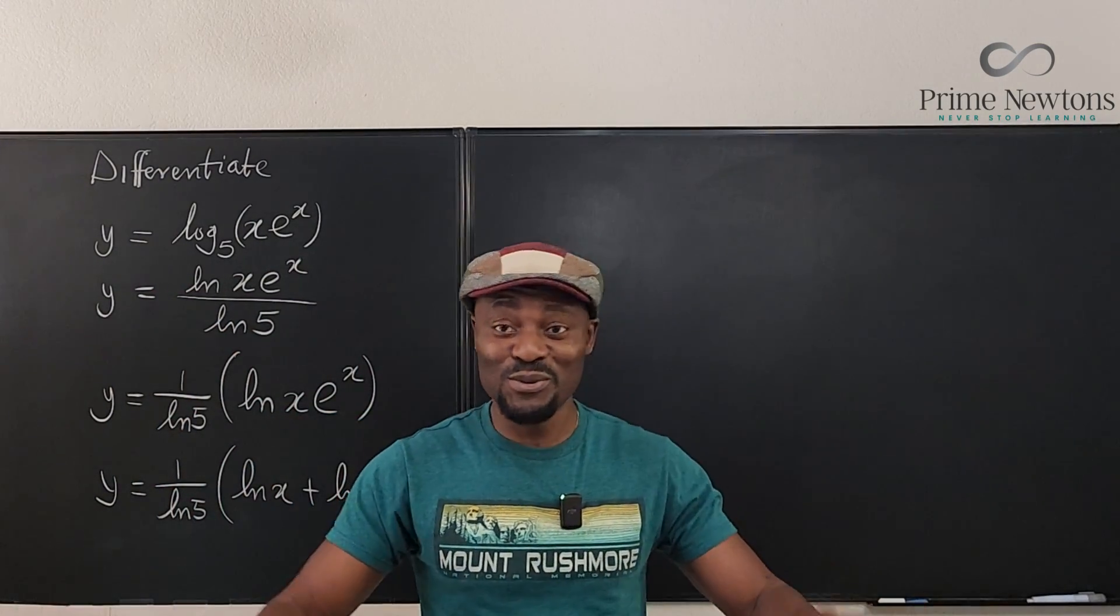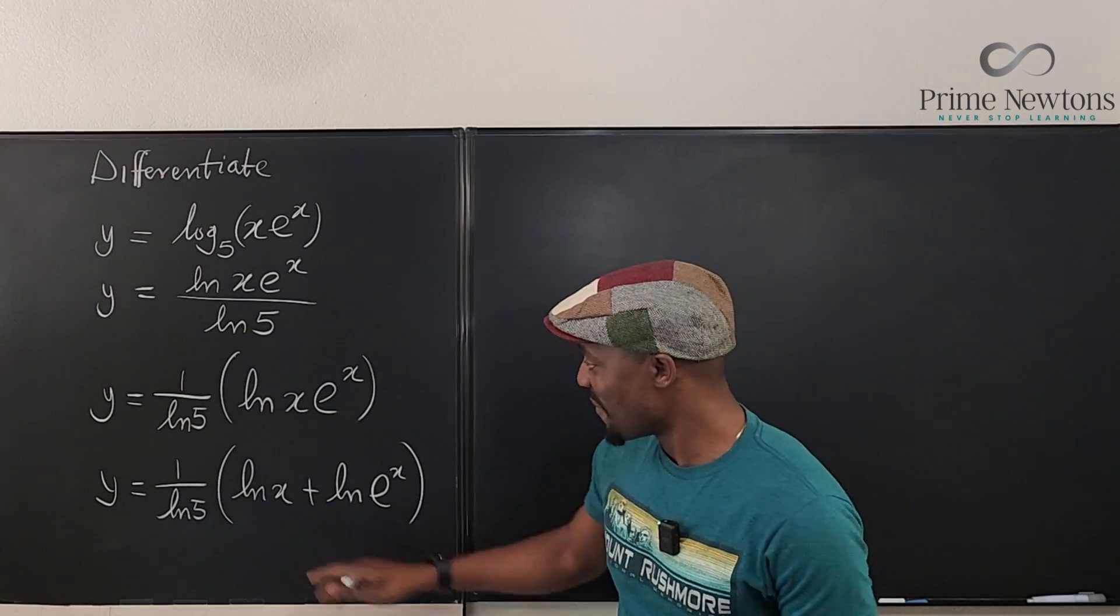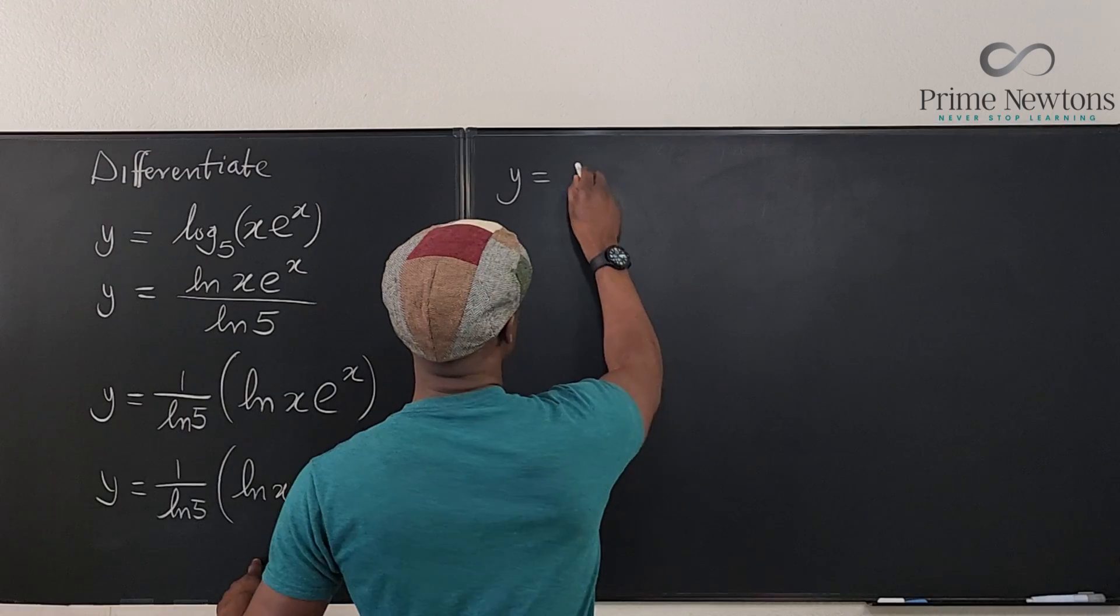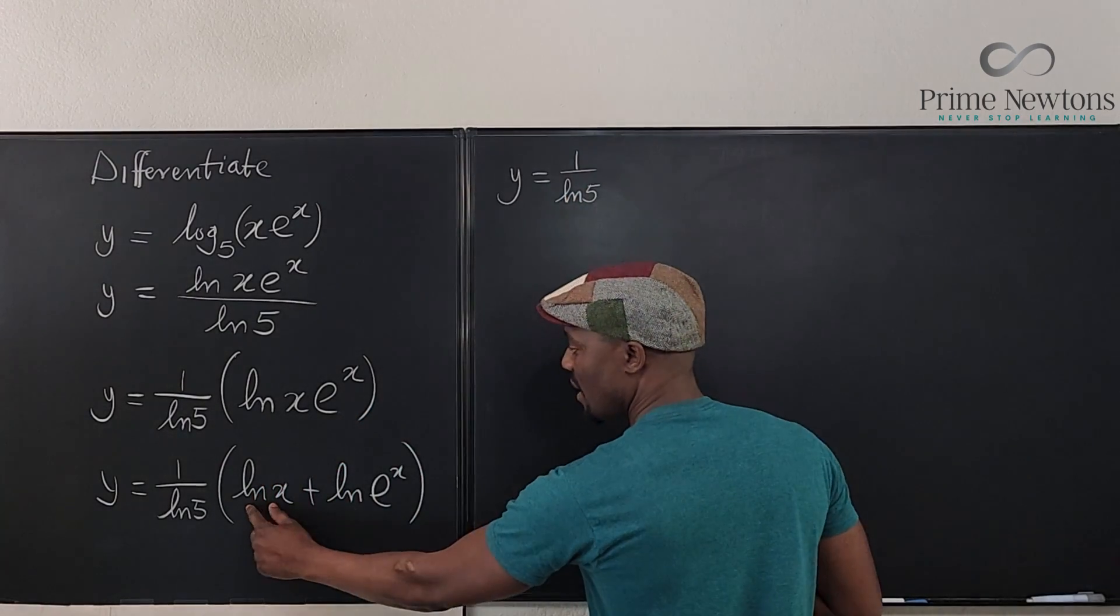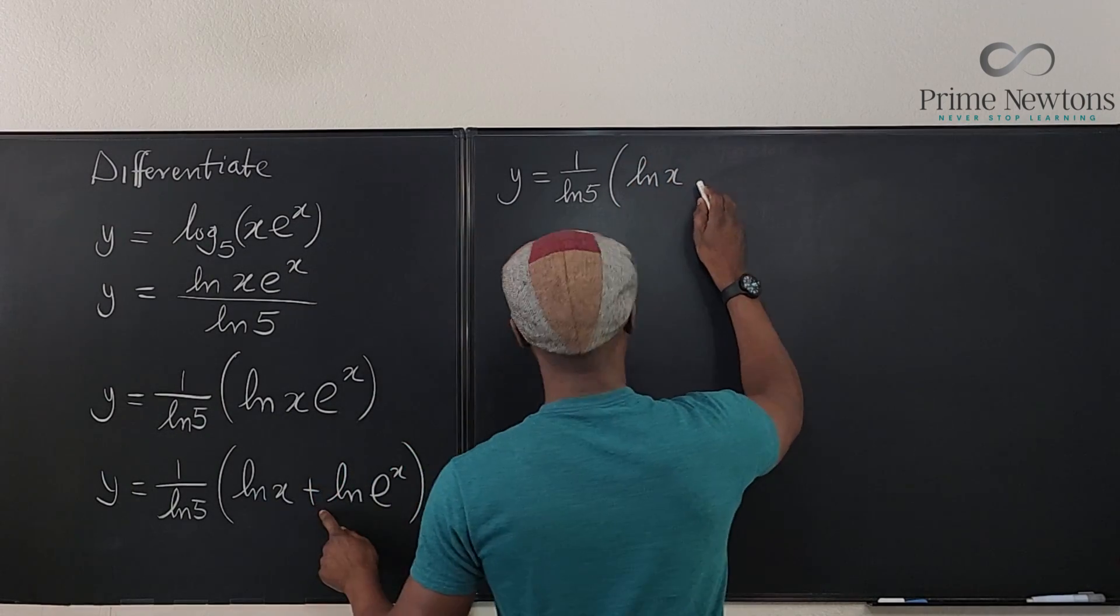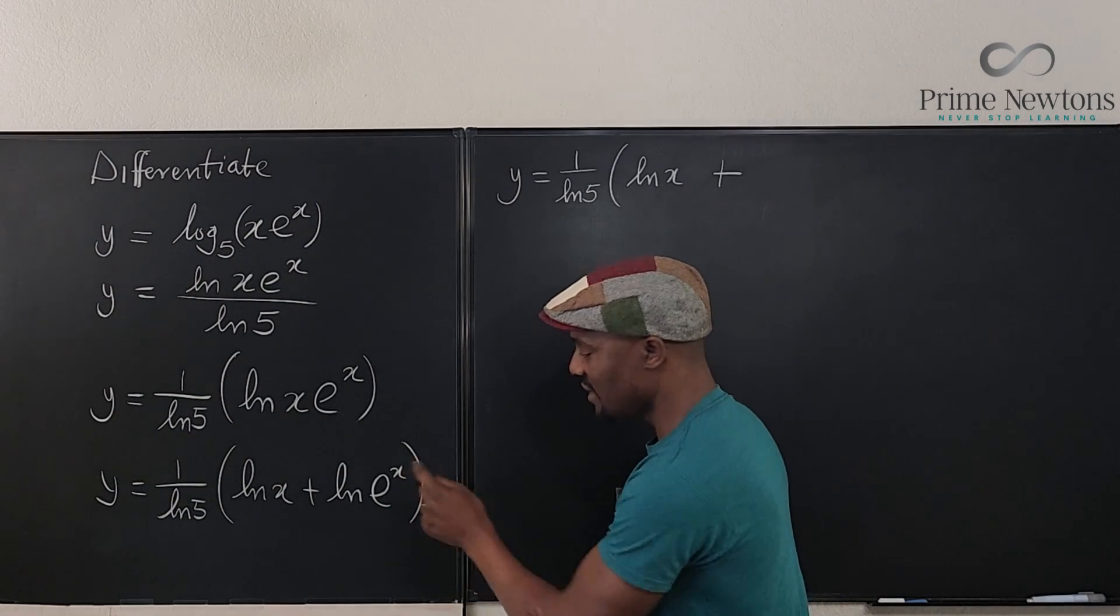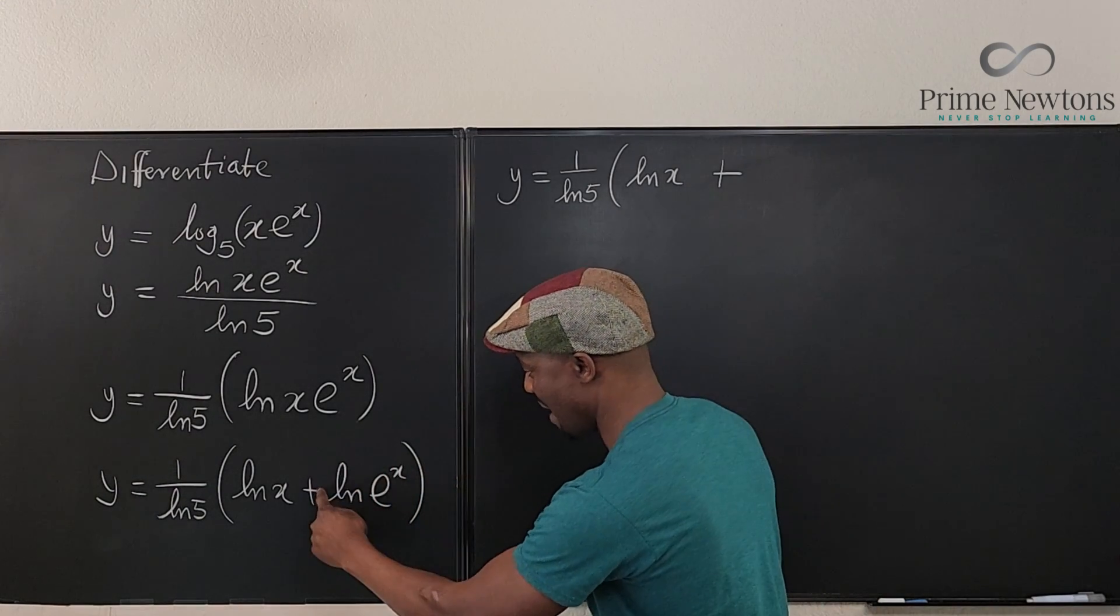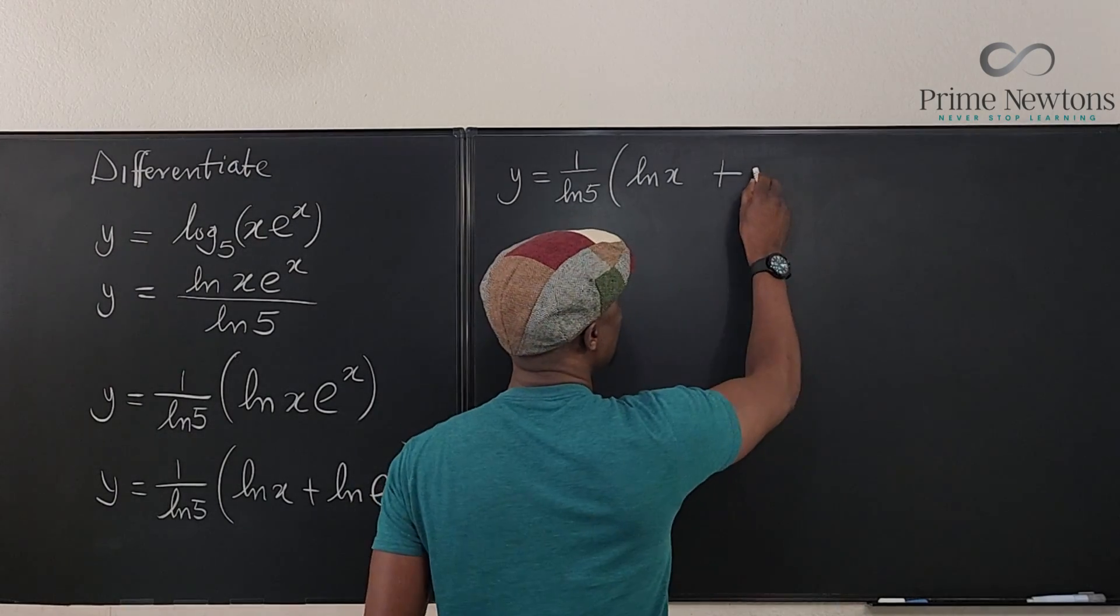So instead of using the product rule, you do logarithmic differentiation. So with this now, I can go ahead and say, y will be equal to one over natural log of five. And then we have ln of x plus, by the way, the natural log of e to the x is just x, right? Okay, pull the x to the back, and ln of e is one, so it's x times one. So I have this to be x.